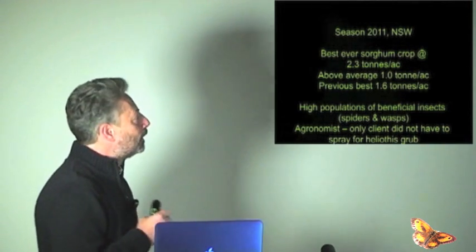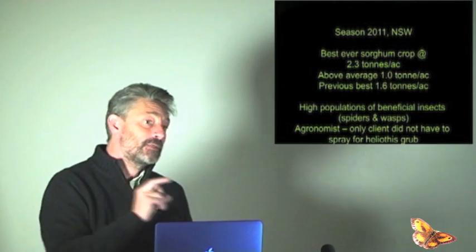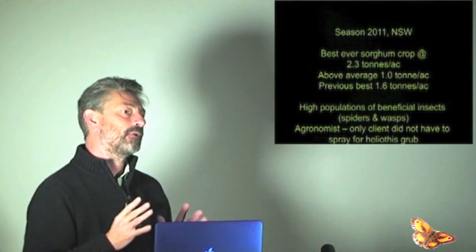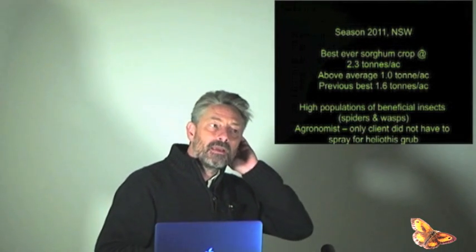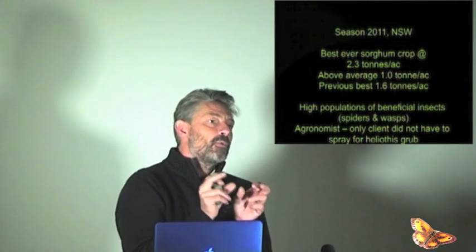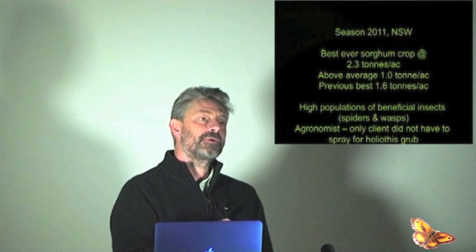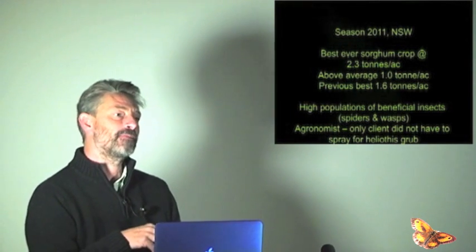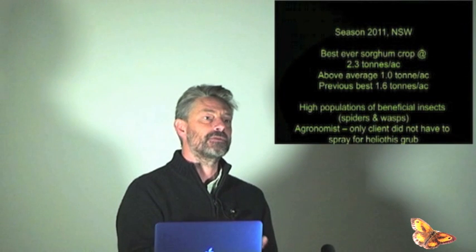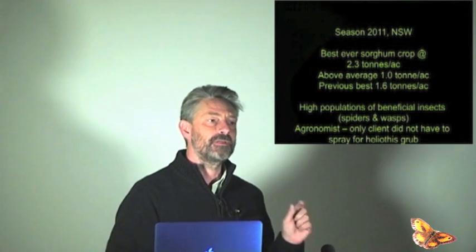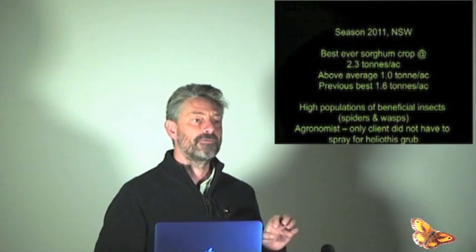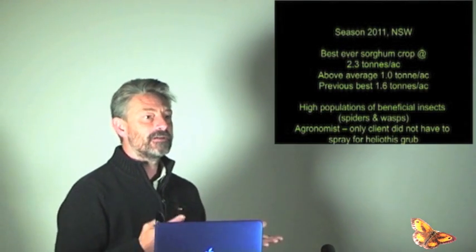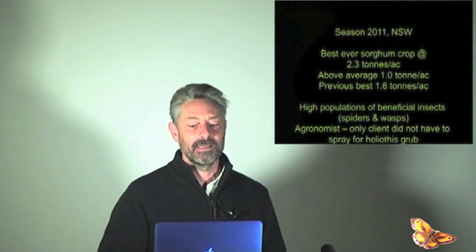Two weeks after this work, they planted a crop called sorghum, an arid tolerable grain. What happened was they yielded 44.5% higher than they had ever yielded before. Beyond that, they were the only farm amongst 10 local farms that didn't have to use pesticides, because there were so many natural predators in the crop, specifically spiders and wasps, that the predatory heliothis grub was simply managed in a natural and biological fashion.